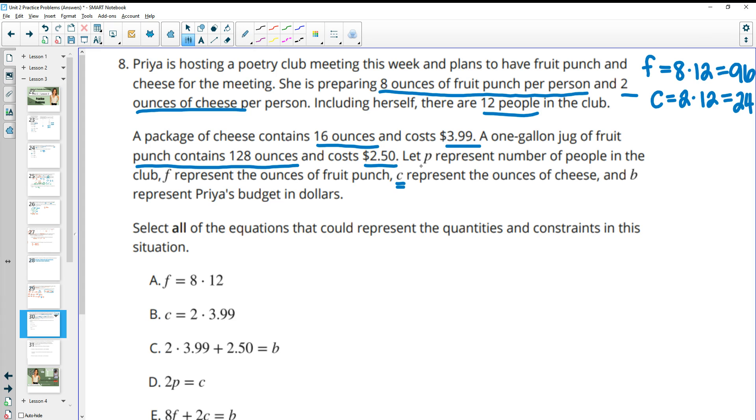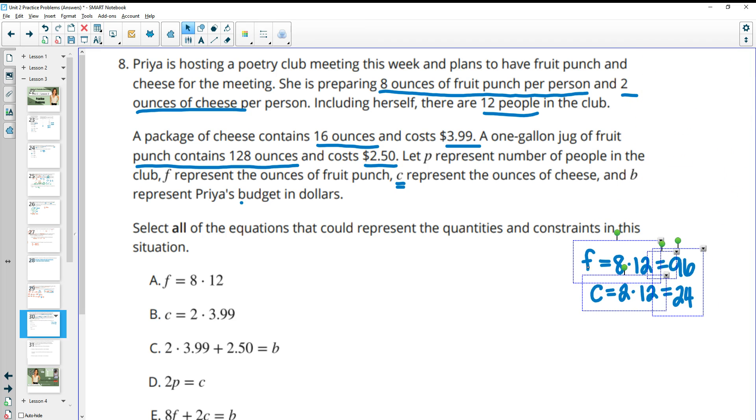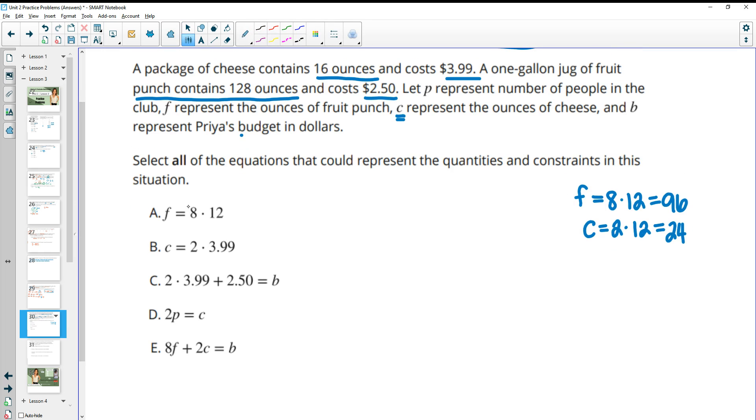So let P represent the number of people in the club, F represent the fruit punch ounces, C represent the ounces of cheese, and B represent the budget in dollars. So select all equations that could represent quantities here. So we see that F equals eight times 12 would be the ounces she's planning of fruit punch per person. So the ounces and then per person of fruit punch. So A is good.